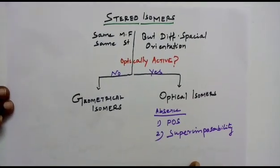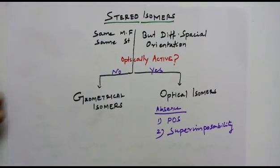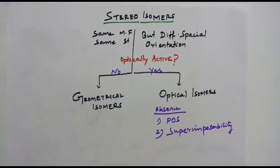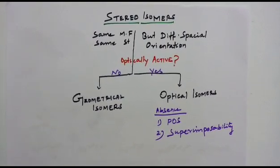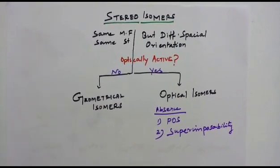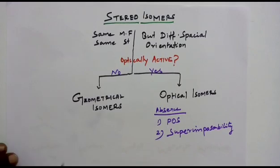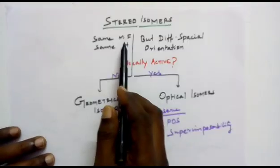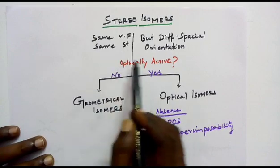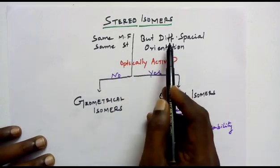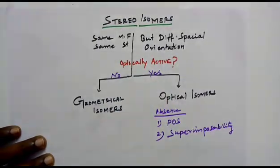Hello friends. In this video we are going to study about the stereoisomers of square planar complexes and tetrahedral complexes. First of all, what are stereoisomers? They possess the same molecular formula, same structure, but they differ in the spatial orientation of the ligands connected with the metal.